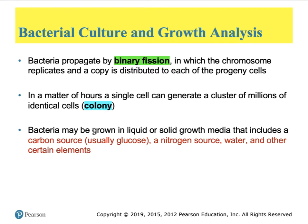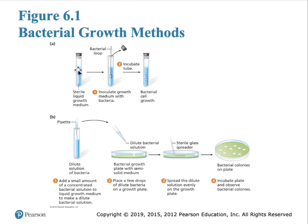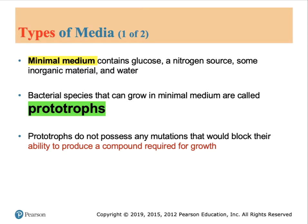Bacteria can be grown in liquid or solid media and normally require very simple sources of nutrients. They need a carbon source (normally glucose), a nitrogen source to make amino acids, water, as well as a few other vitamins and minerals. Figure 6-1 shows the two alternatives normally used for growing bacteria — liquid culture and solid media. The type of media used can also be used to identify mutants.